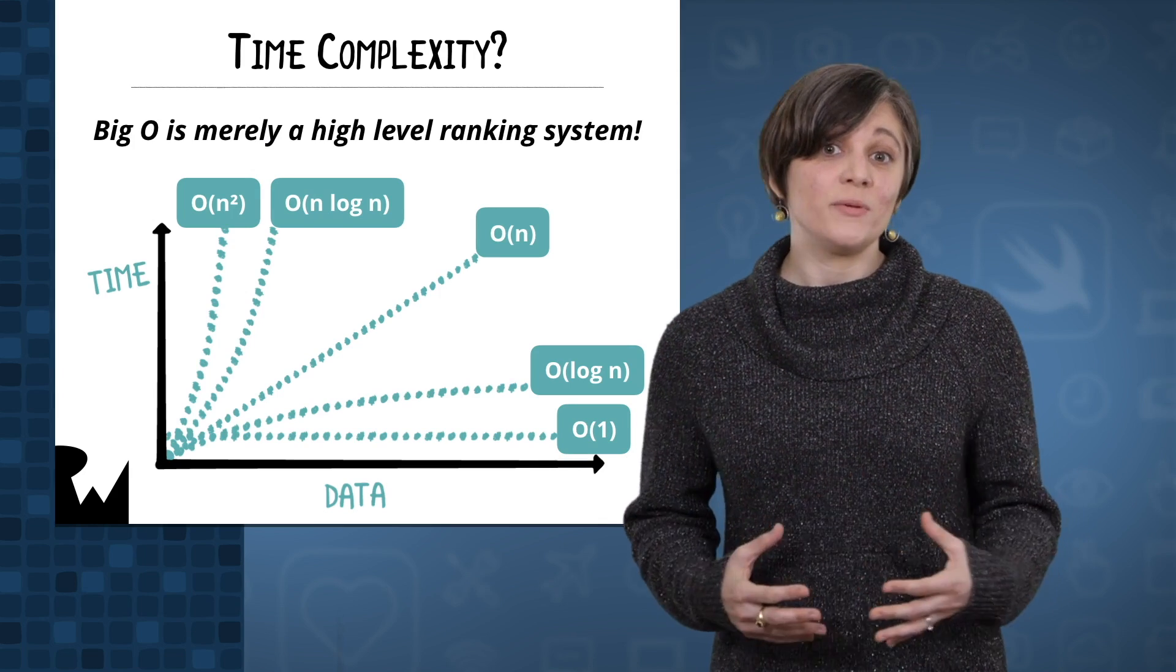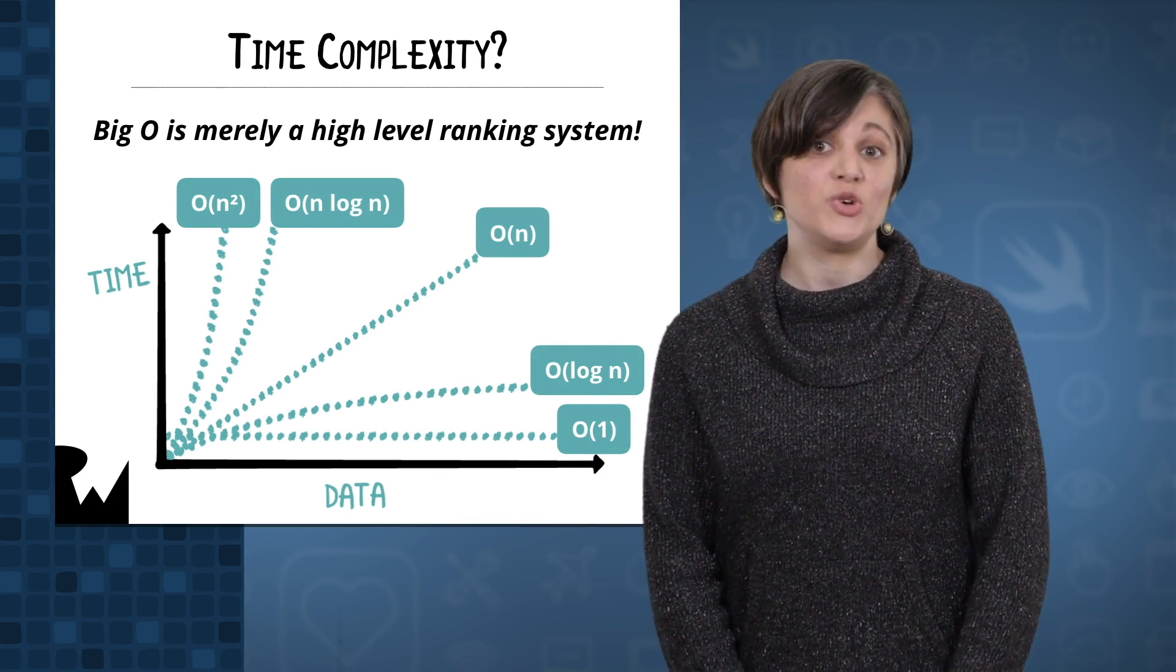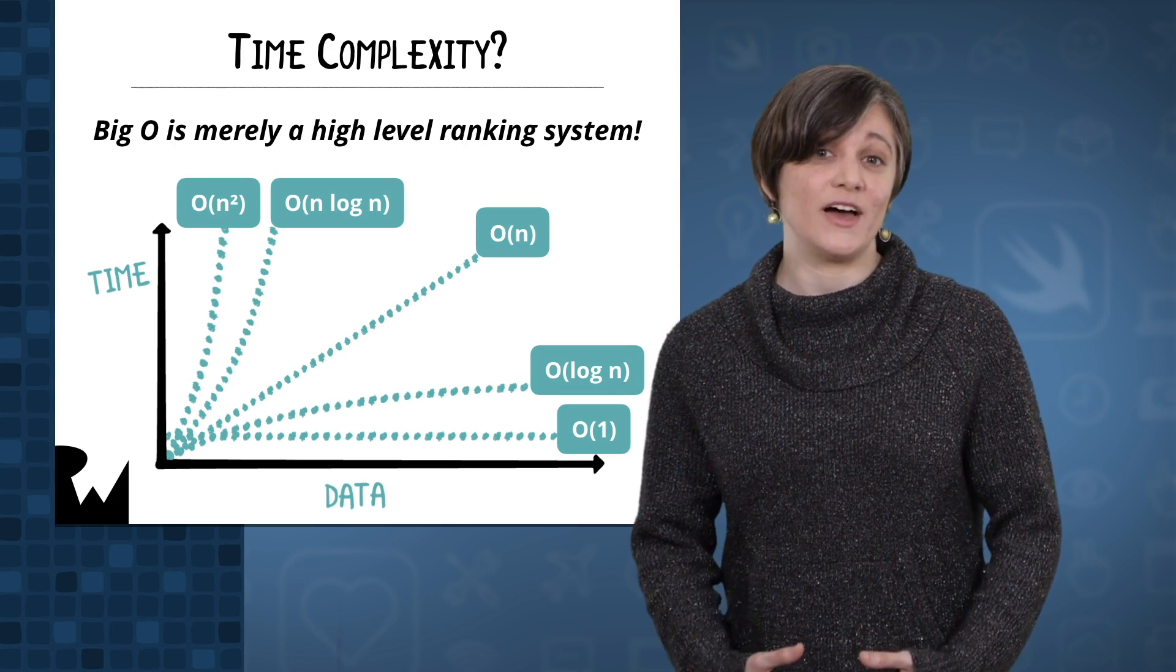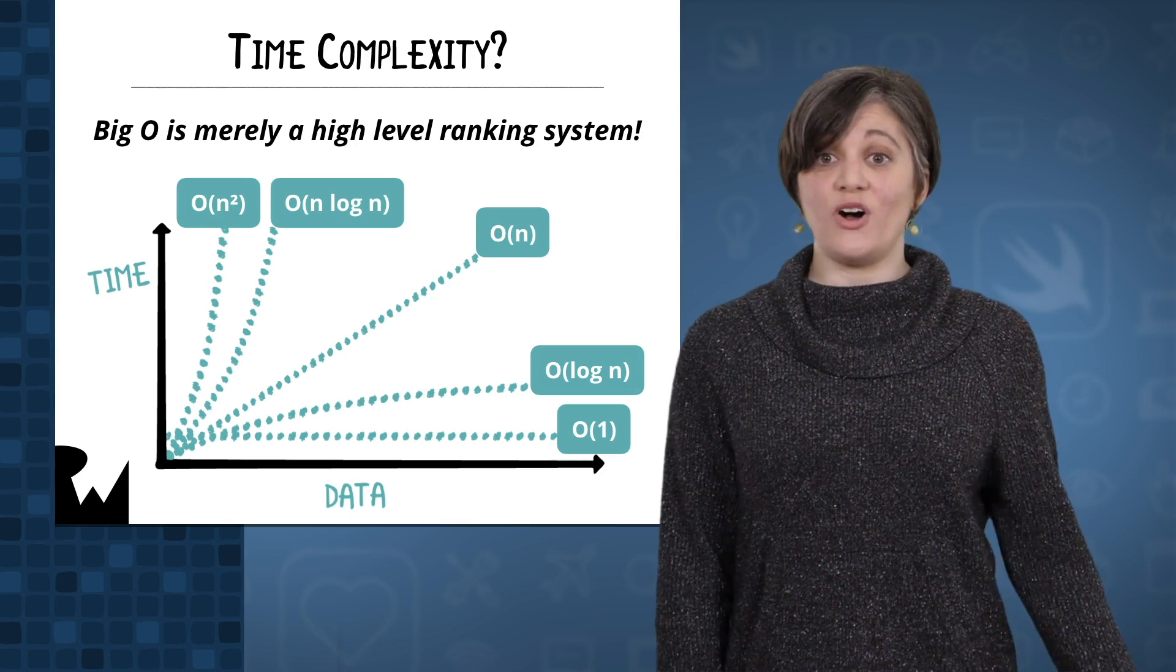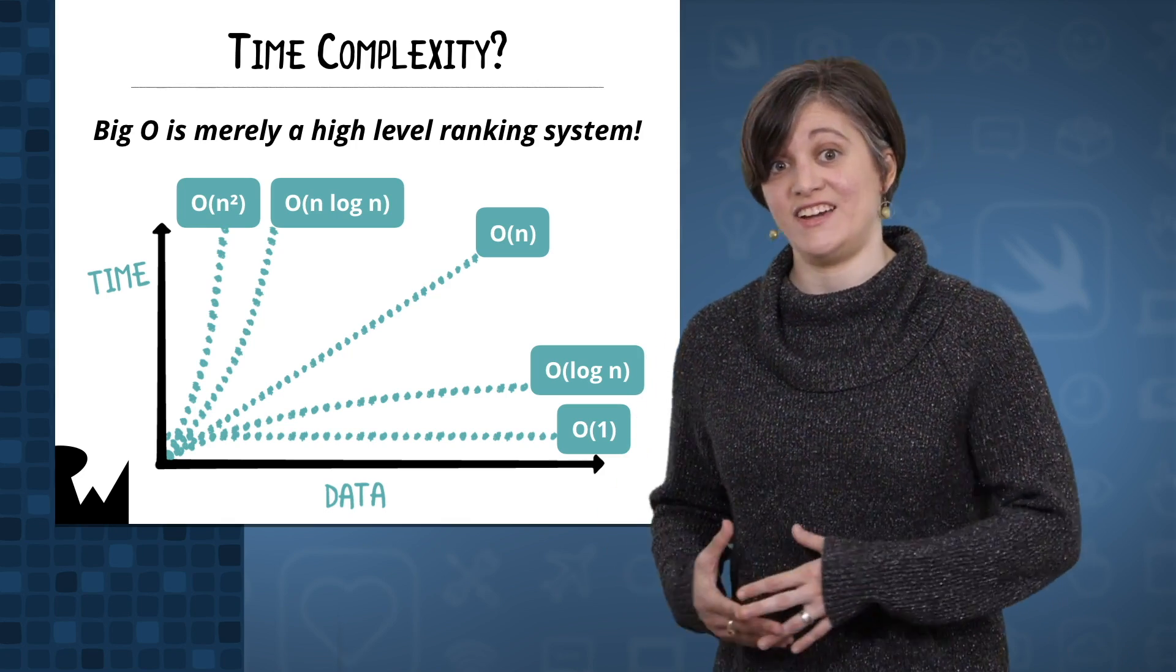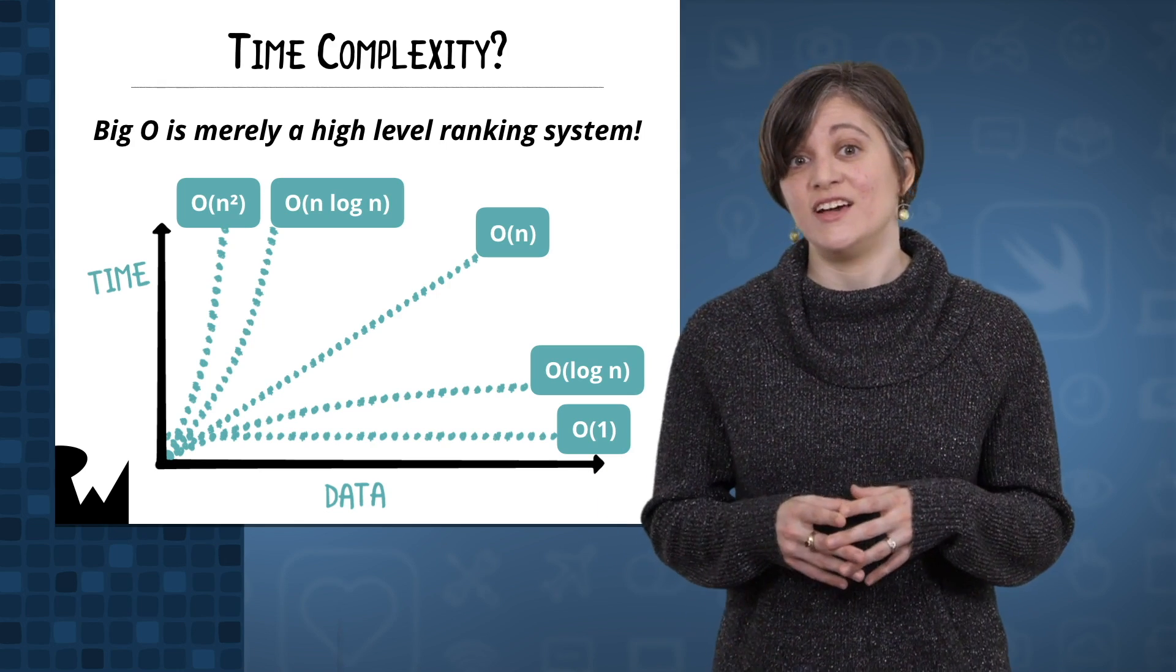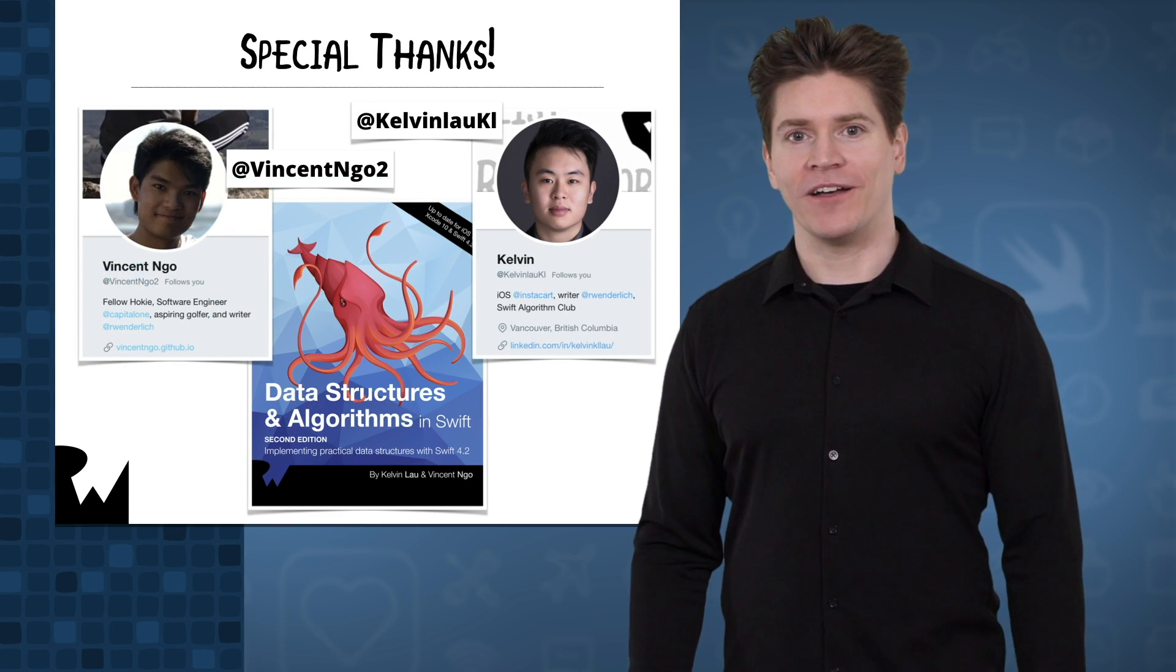It is important to note that time complexity is just a high-level overview of performance. So two algorithms can have the same time complexity, but one may still perform much faster than the other. You should also remember that time complexity becomes more important the larger your dataset is. So for small datasets, time complexity may not be a helpful measure of speed.